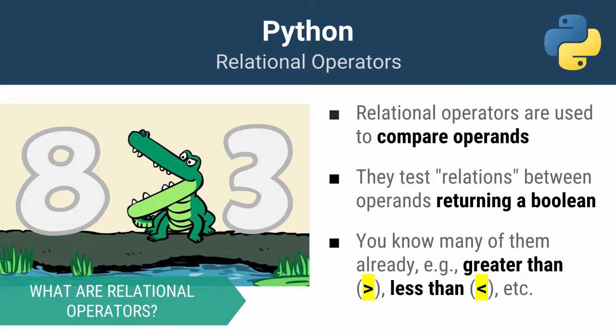You already know what these are — they're things like the greater than and less than symbols that you've been using forever. Notice how we're using a greater than relational operator to check whether eight is greater than three. We all know that eight is greater than three, so this would return true. If it was not, it would return false.